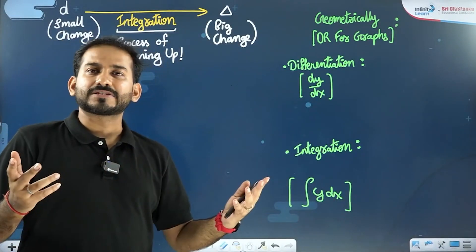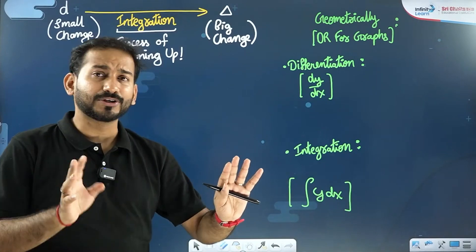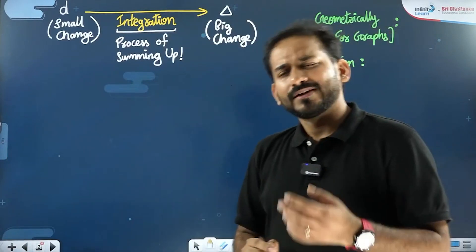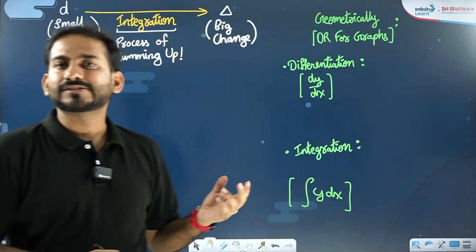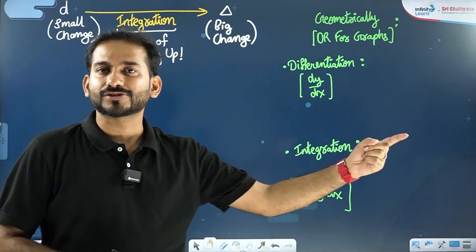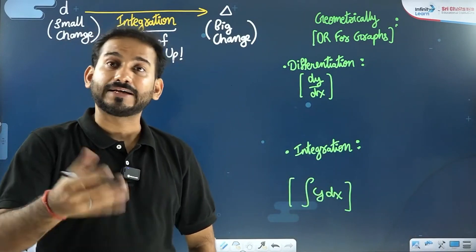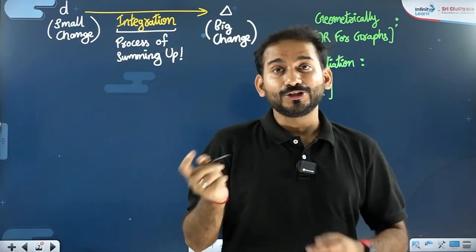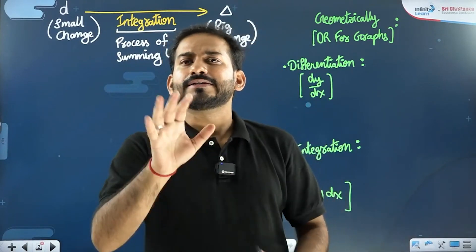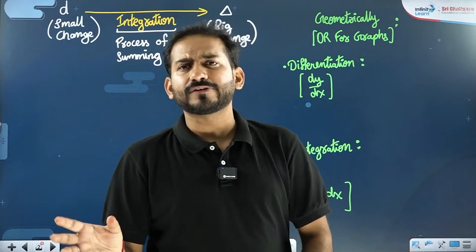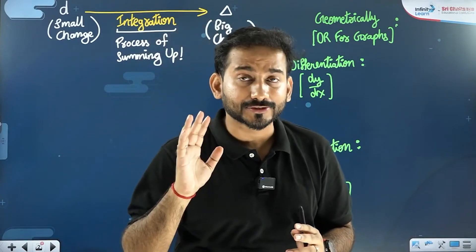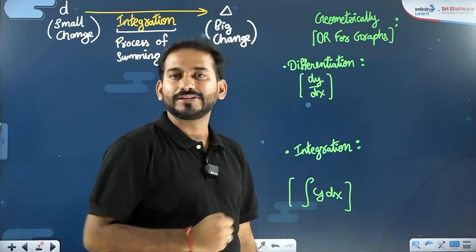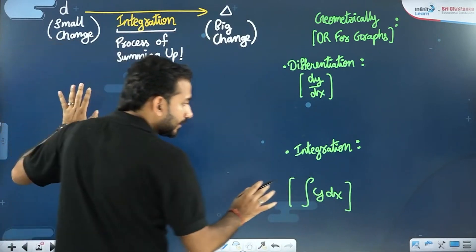If you are specific from where to where, that is called definite integration. But if you don't know where to start and where to end, that type of integration is called indefinite integration. They both have their own uses. Sometimes in physics we would like to be specific regarding the change, so we talk about definite integration. Sometimes we want flexibility, then we use indefinite integration.